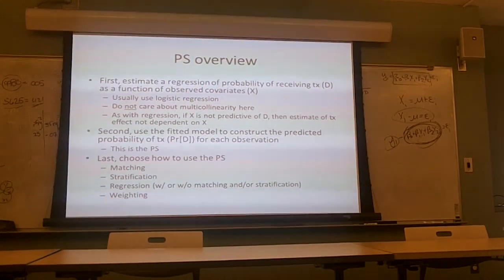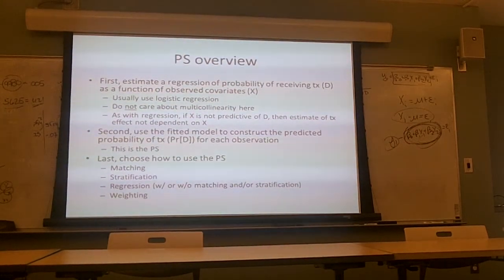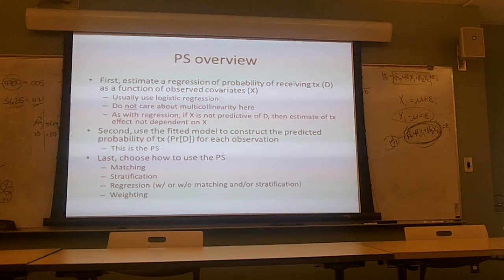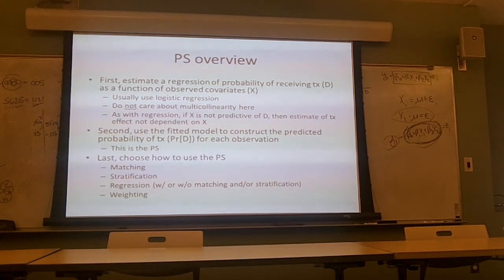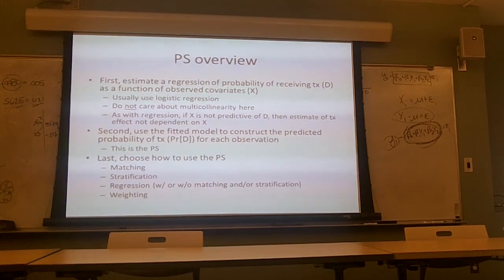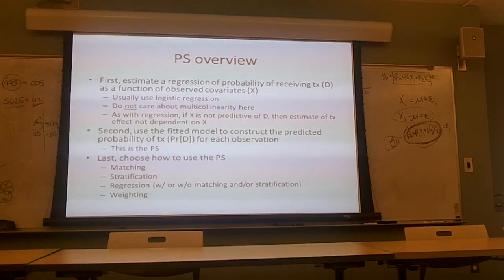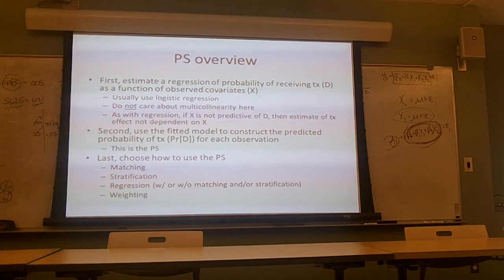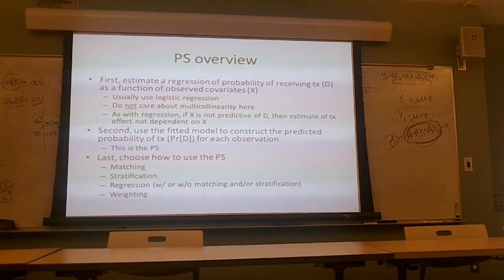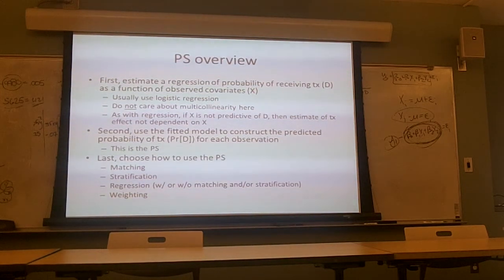This is a purely mechanical operation — we're trying to load up the logistic regression as much as possible to get balance. We're explicitly excluding the treatment variable from this X vector; we're modeling just 'did you get the treatment' as a function of everything else we're trying to control for: patient demographics, clinical characteristics, all of that. We can include higher-order terms and interactions. Then we take that predicted probability — that is the propensity score. If a particular covariate X is not predictive of getting the treatment, it doesn't matter for estimating the treatment effect either.